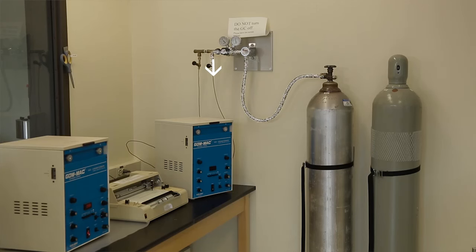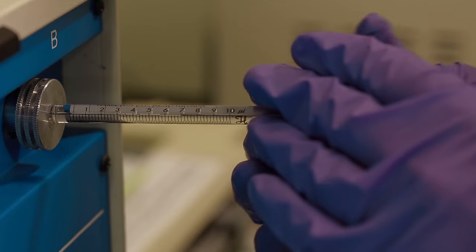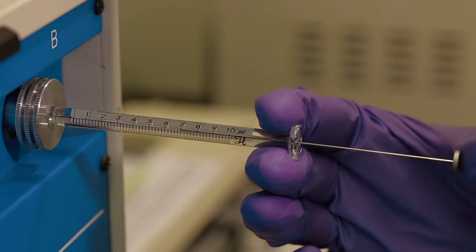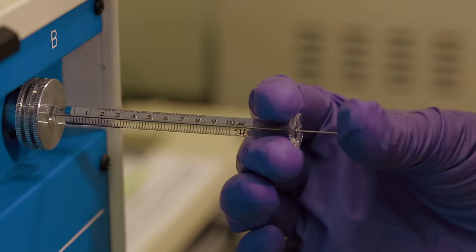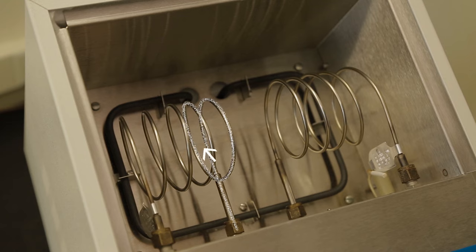Helium runs through the column and is the mobile phase. A sample injected into the gas chromatograph is instantly vaporized in a heated injection chamber so that the components are in the gas phase and then it flows through the column. The helium is the carrier for your sample.